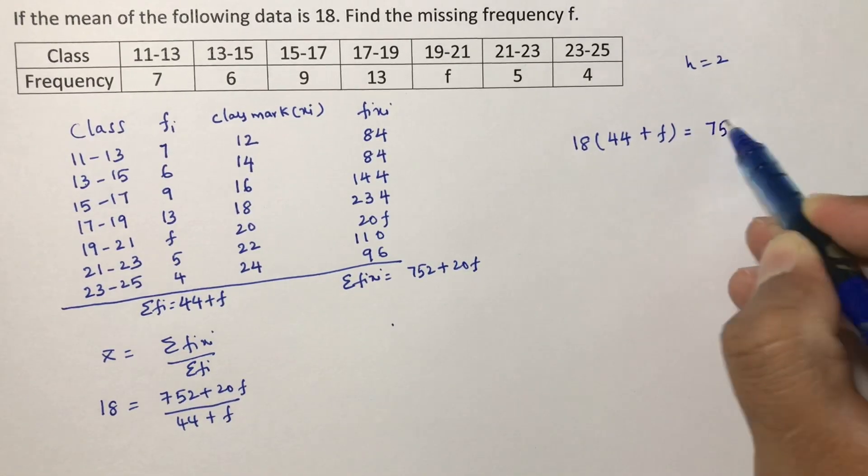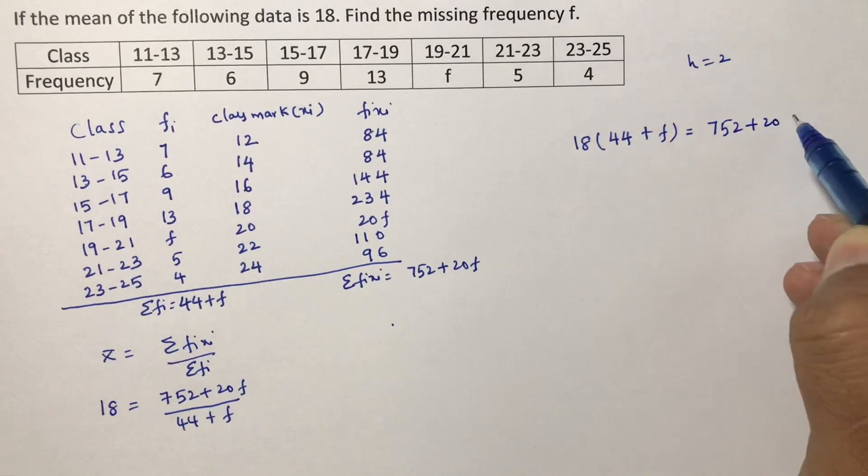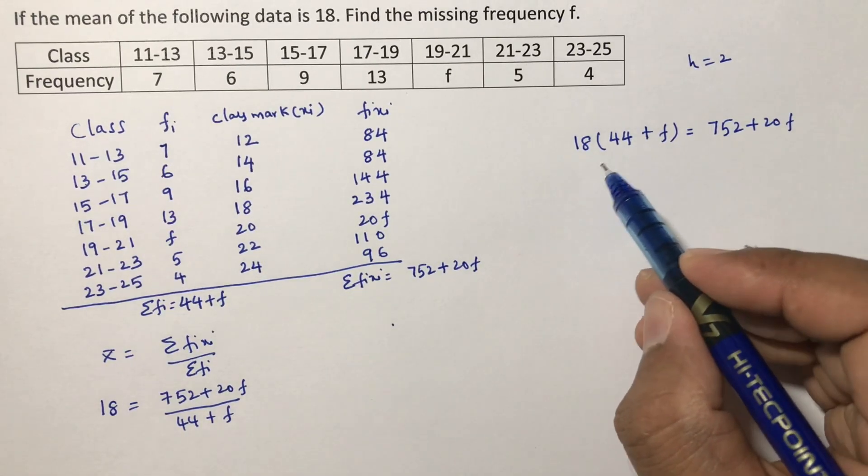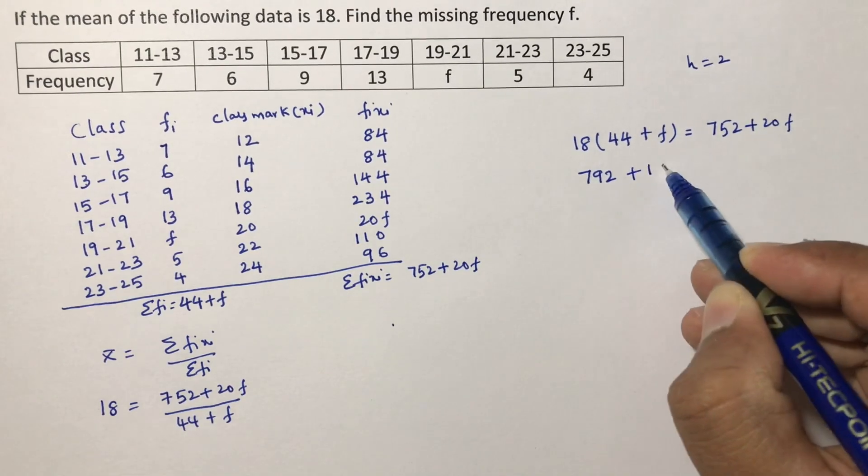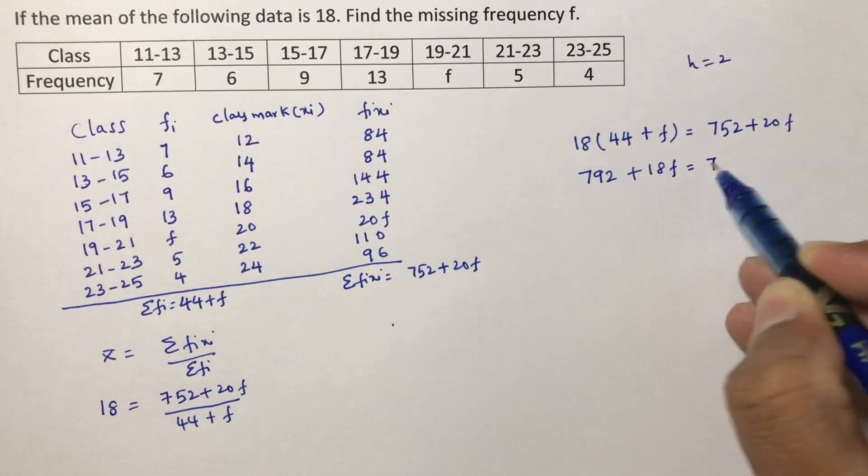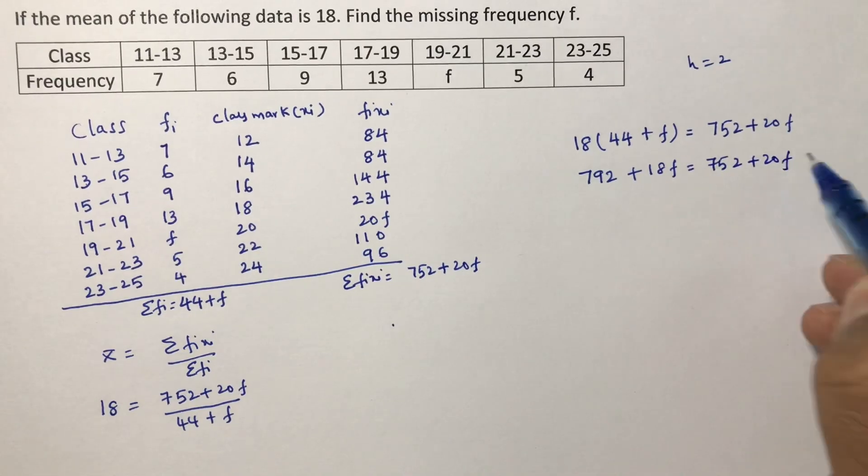If you cross multiply here, 18 times 44 plus F equals 752 plus 20F. 18 times 44 is 792, plus 18 times F, equals 752 plus 20F.